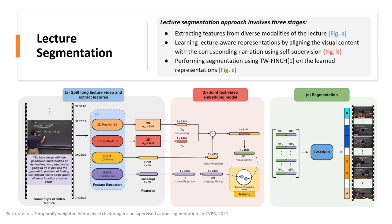The joint text-video embeddings are learned by leveraging visual, textual, and OCR cues, and are trained on a pretext self-supervised task of matching narration with temporally aligned visual content using the max margin ranking loss.